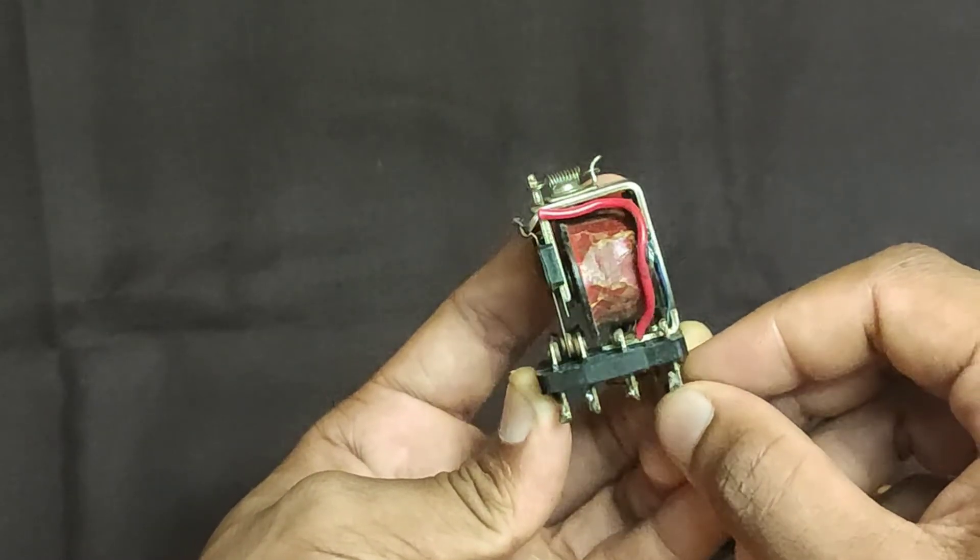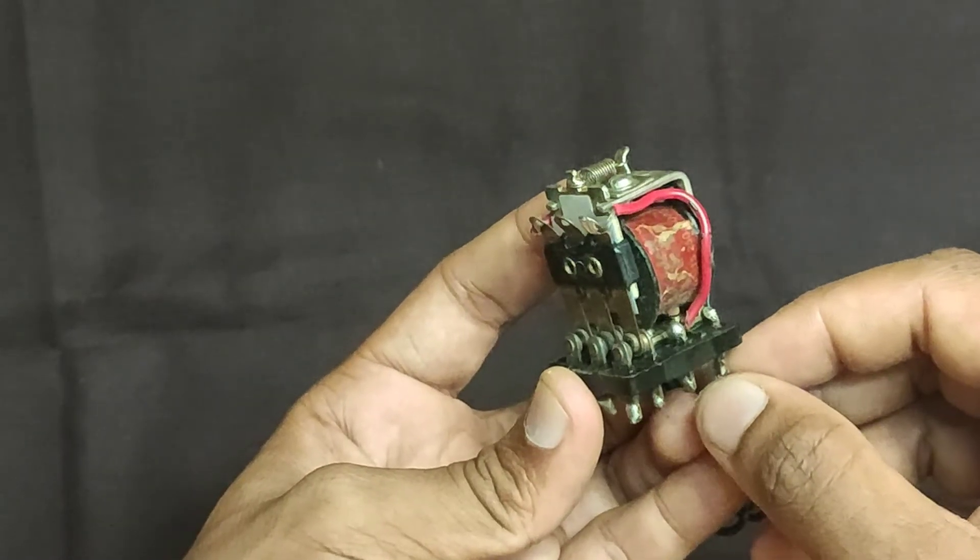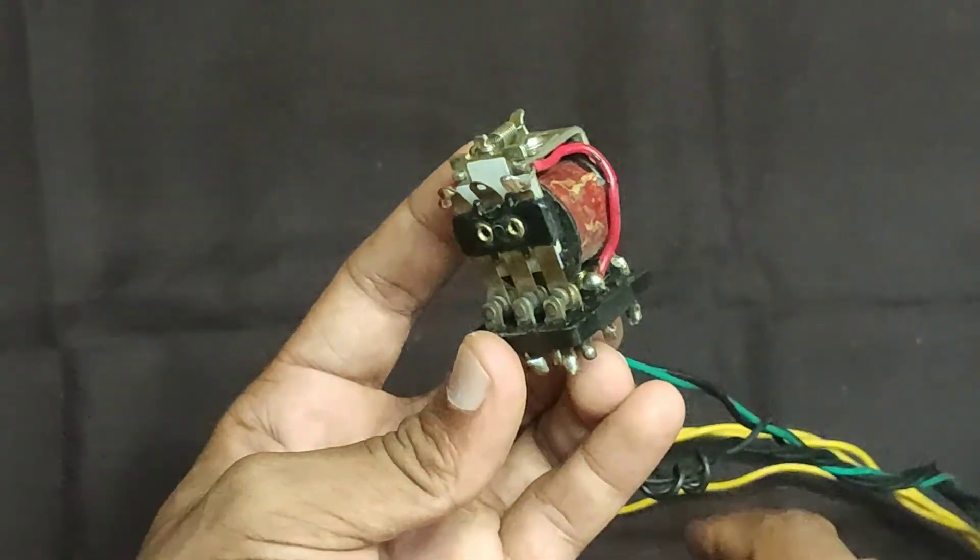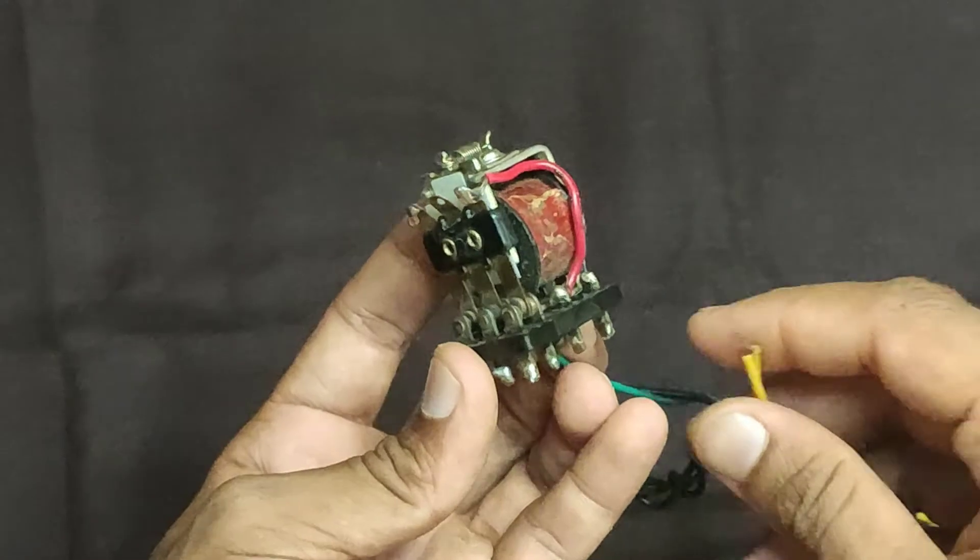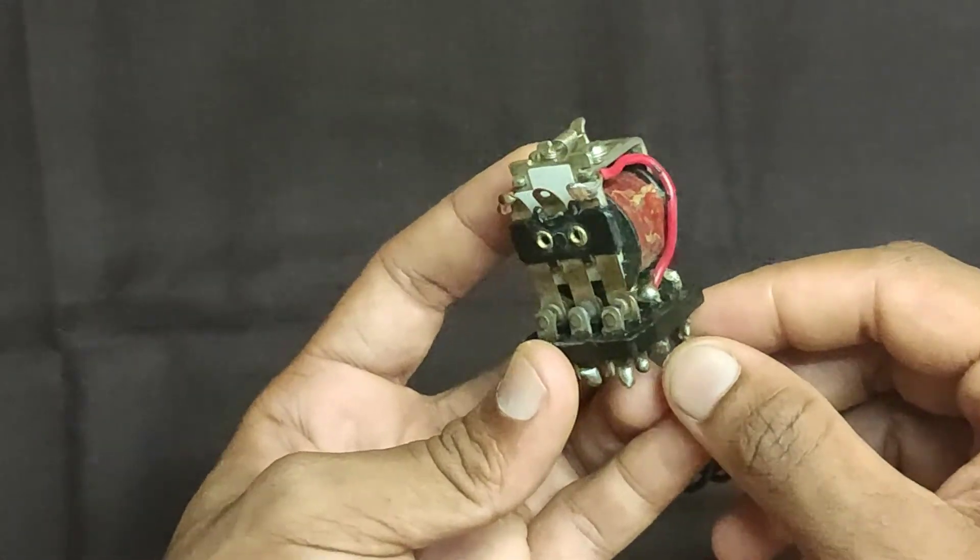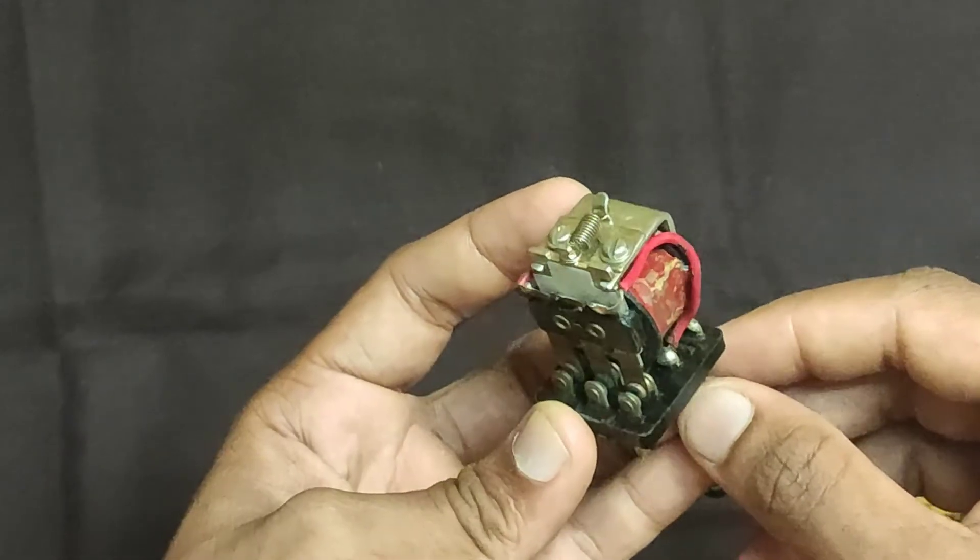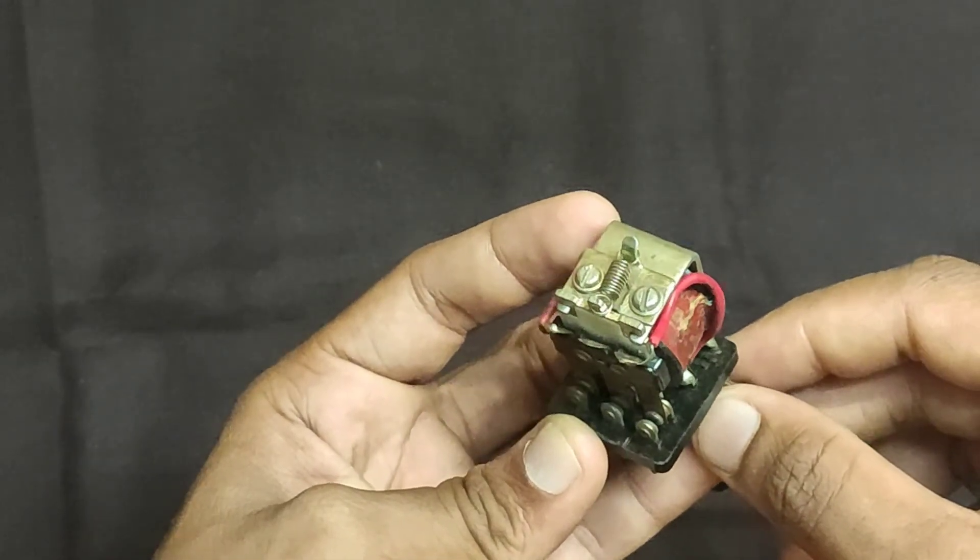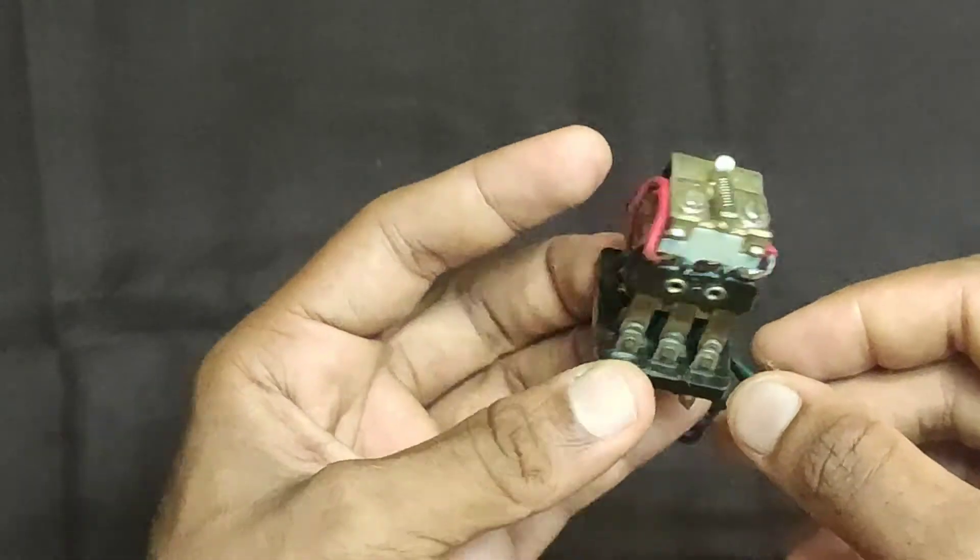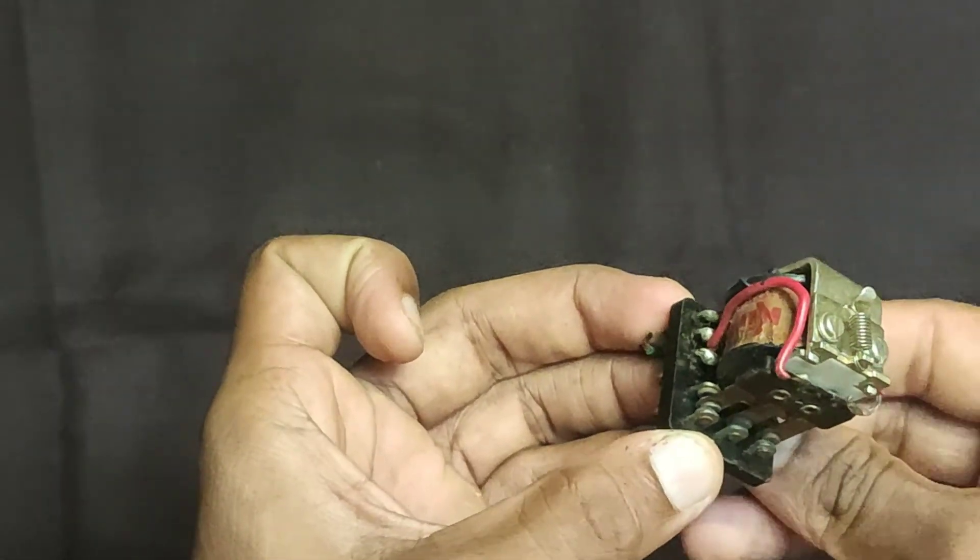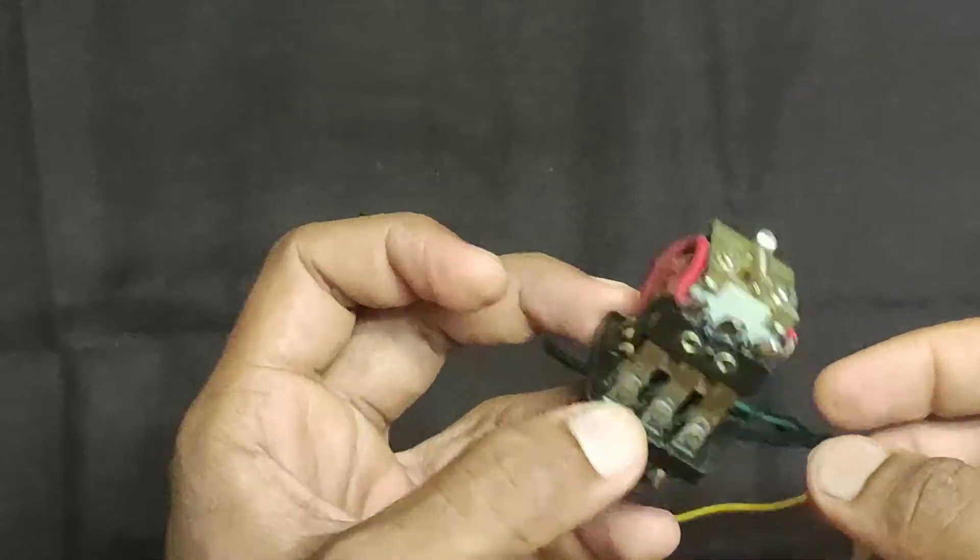Let's connect the supply to the relay. You can observe that the iron contact is moving towards the electromagnet. When I cut the supply, going back to its original position. You can see that the three contacts are moving at once because they are connected mechanically.